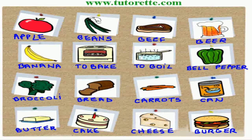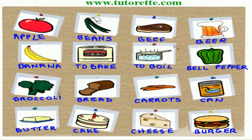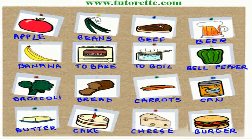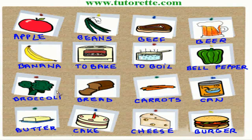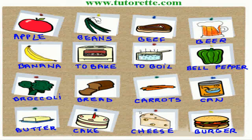Let us repeat the words one more time. Apple. Beans. Beef. Beer. Banana. To bake. To boil. Bell pepper. Broccoli. Bread. Carrots. Can. Butter. Cake. Cheese. Burger.